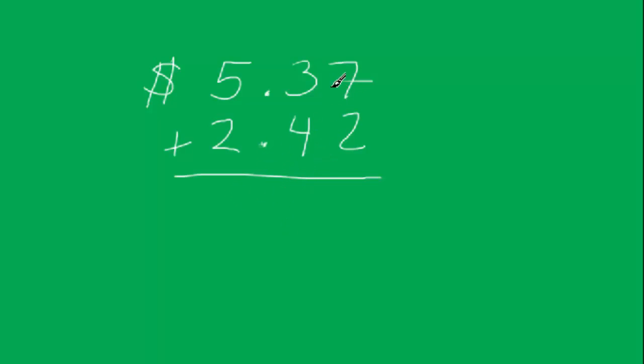Well there's a couple ways to do this. We can just line up the columns like this and we can just do 7 plus 2 is 9, 4 plus 3 is 7, and 5 plus 2 is 7 also. And then we just bring the decimal point down that same column and we have $7.79.